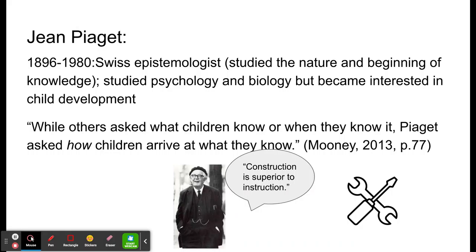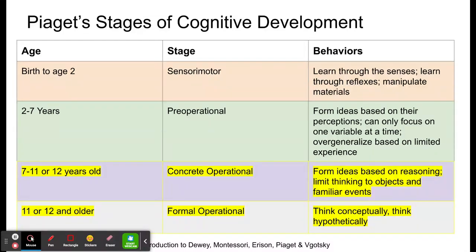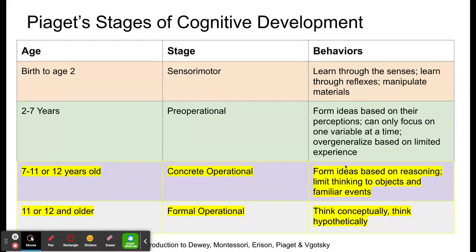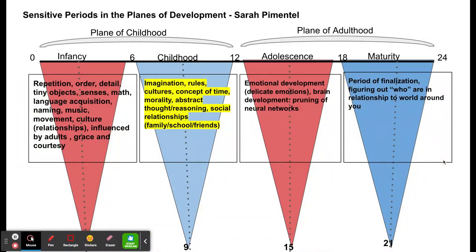Piaget and Erikson both had the philosophy that construction of knowledge — how children get knowledge — comes from how they interact with the world; that's how children learn. Piaget broke development down into four stages from birth to twelve. I'd like you to keep in mind Piaget's stages contrasted with Erikson's stages and then contrasted, of course, with the sensitive periods which Dr. Montessori identified.